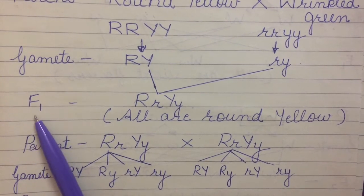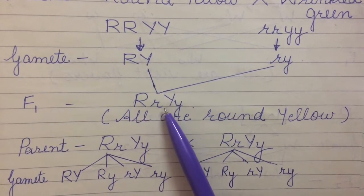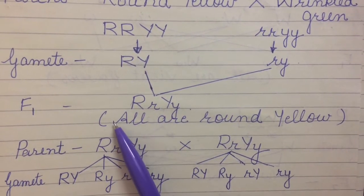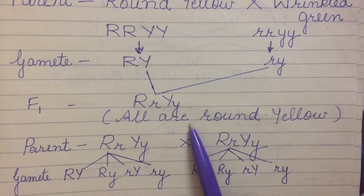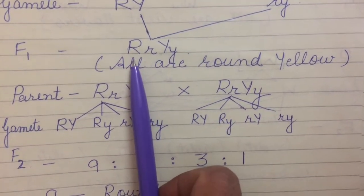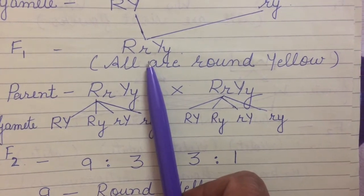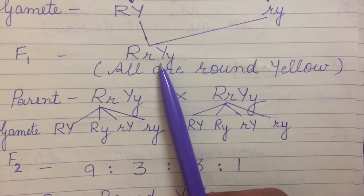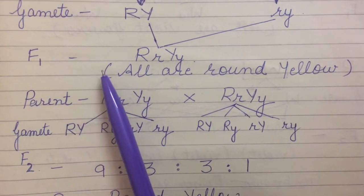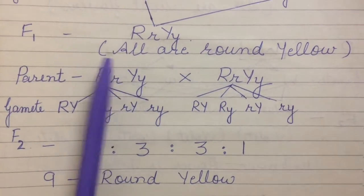At the time of fertilization, when the two gametes will fuse — jab dono fuse karenge — the F1 progeny that forms, the next generation mein sabka genotype kya hoga? Capital R small r, capital Y small y. Yeh R us R se mil gaya aur Y us Y se mil gaya. So all the individuals of F1 generation will be round yellow — because capital R is the dominant character and capital Y is dominant, so green will not show its effect. In F1 generation, all the individuals will be round yellow.